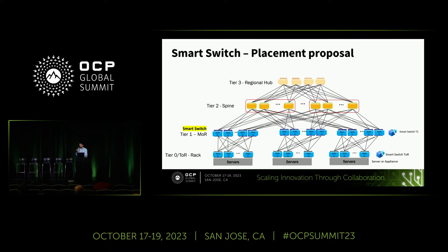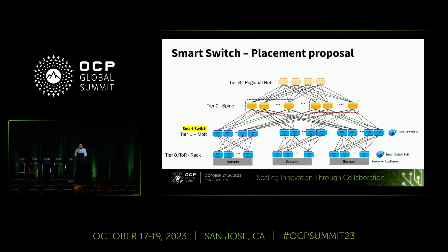I want to touch base on a proposal for the Smart Switch. For this discussion, I'm considering Smart Switch at the T1 layer for all the slides discussing packet flows. But the Smart Switch can be deployed at the T0 as well — it can be Smart Switch ToR or Smart Switch T1. Smart Switch at the T1 layer provides redundancy and also high availability. High availability is a key feature for the Smart Switch deployment.